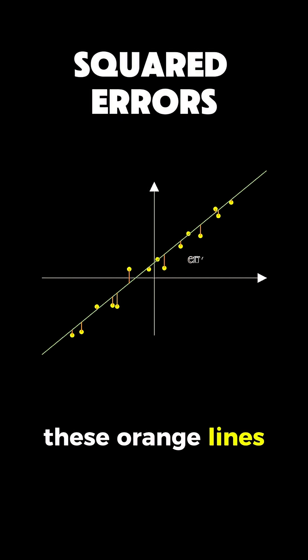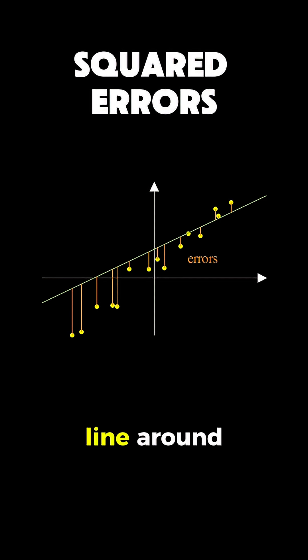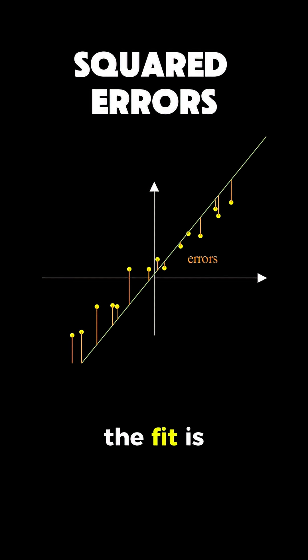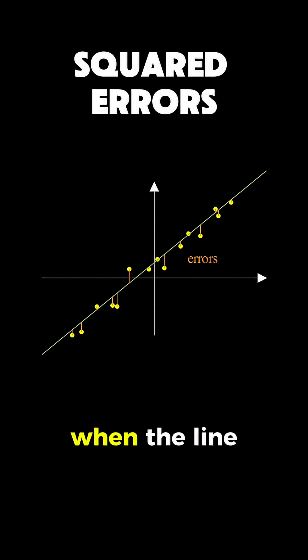You can see these orange lines showing the errors, and notice how they change as I move the line around, getting longer when the fit is poor and shorter when the line gets closer to the pattern in the data.